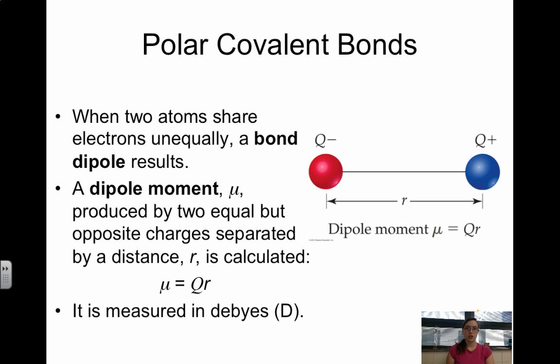So when two atoms share electrons unequally, we have what is called a bond dipole. So a bond dipole is this partial negative, partial positive side of the bond. We can actually calculate this in a quantitative matter using a dipole moment. So the dipole moment is represented by mu. This is the Greek letter mu. And again, it's just a quantitative measure of the magnitude of a dipole. So the higher the dipole moment, the more polar the molecule.